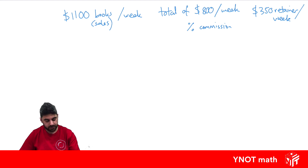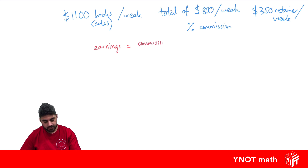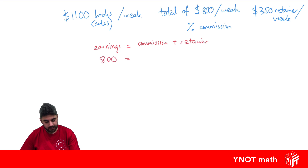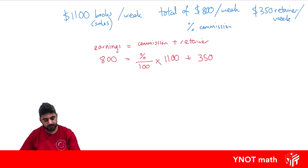Let's make an equation that we can solve. Our earnings equals the commission plus the retainer, so: $800 equals our percentage over 100 multiplied by our sales of $1,100, plus the retainer of $350. We can go ahead and solve this equation for our percentage — subtract $350 from both sides, which gives us $450 equals our percentage over 100 multiplied by 1,100.